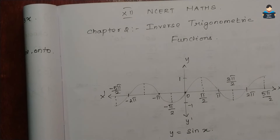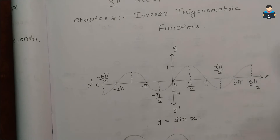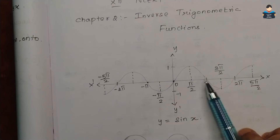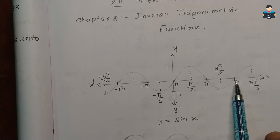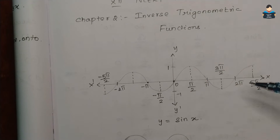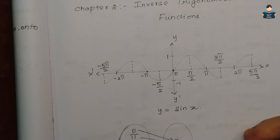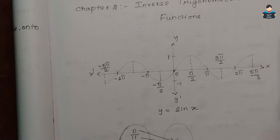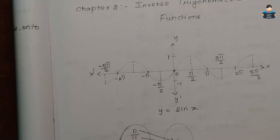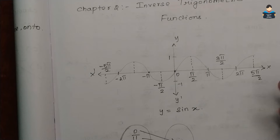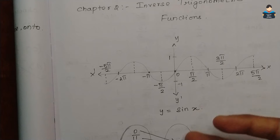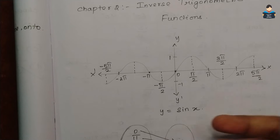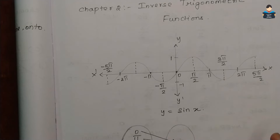Now for sin x, we will see the graph. On the graph we can see values 0, pi, minus pi, minus 2pi, and 2pi. Looking at this, for sin x to have an inverse every element should be mapped with only one image — that is one-to-one. However, as we can see, sin x is neither one-to-one nor onto over the full real line.